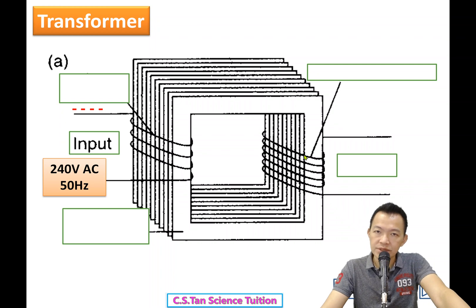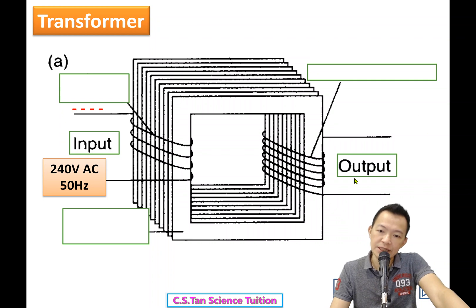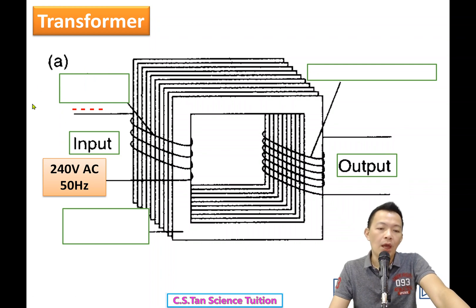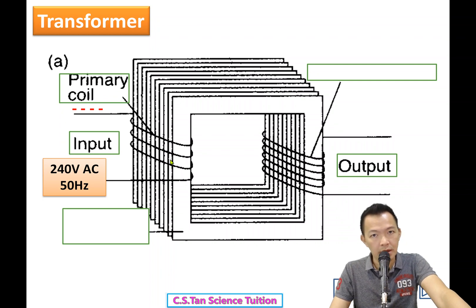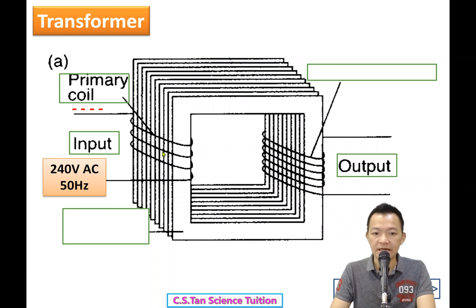The output depends on how much voltage you want. You can convert 240V to 480V or bring it down to 12V or 3V — that's your output. The input coil is called the primary coil, made of copper wire wound around the core. The primary coil is on the input side.